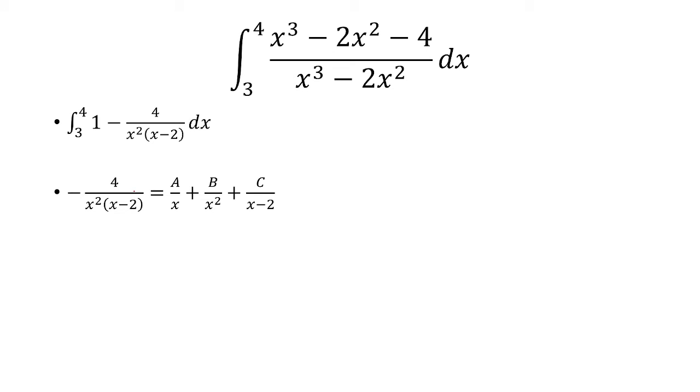So let's start with negative 4 over x squared times x minus 2. The idea is to get all factors of x squared. All factors of x squared are x and x squared. And then for x minus 2, we just have x minus 2. The numerator is going to be a, b, and c.